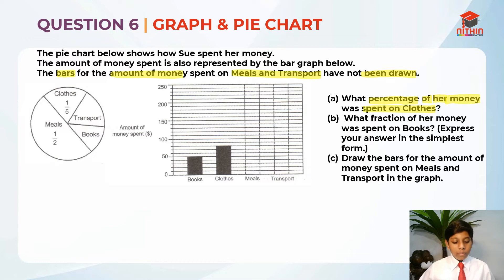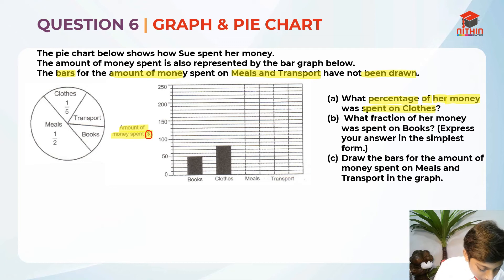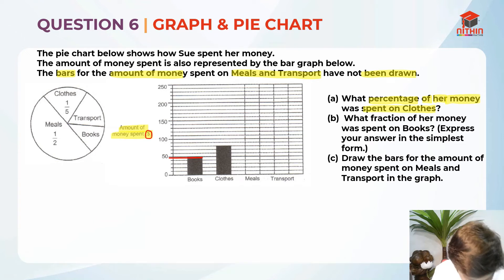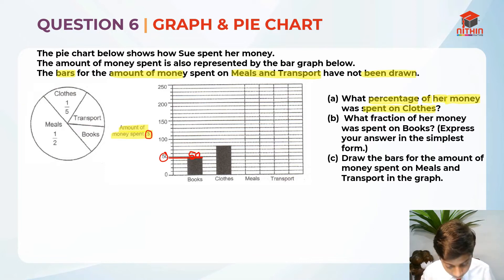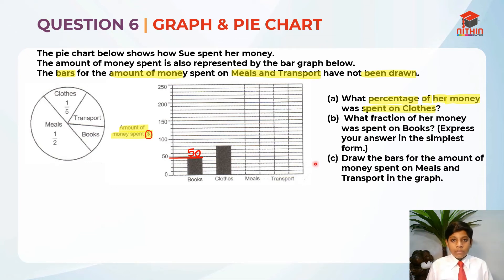The bar graph tells us the amount of money spent in dollars. Looking at the bar graph, the books value is already given — it is 50 dollars, reading straight off the graph. Now since meals and transport are not drawn, we need to find the clothes value. The clothes bar is in the middle and we don't directly have its value, so we need to figure it out.